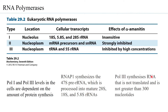RNA polymerase 3 does not synthesize any RNA that is to be translated — it synthesizes RNA that is not translated, such as tRNA and 5s rRNA. Also critically observed is that the size of the RNA synthesized by Pol3 is not greater than 300 nucleotides, unlike RNA polymerase 2, which can actually synthesize very long RNA transcripts.